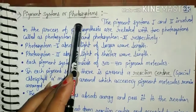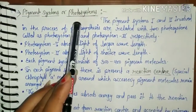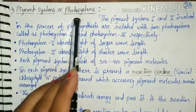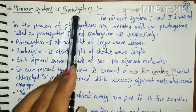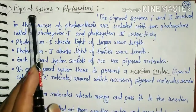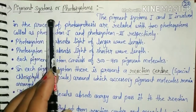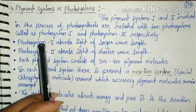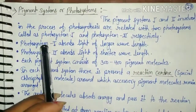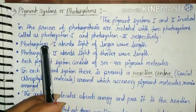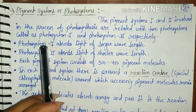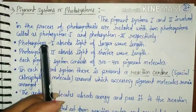One pigment system absorbs light of longer wavelength and the other absorbs light of shorter wavelength. These pigment systems are named as pigment system first and pigment system second. The presence of two such systems has been supported by studies on chloroplasts, which showed two types of particles within the membrane: smaller and lighter particles are PS1, and larger and heavier particles are PS2.